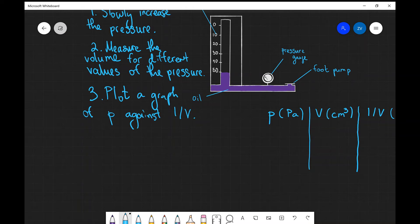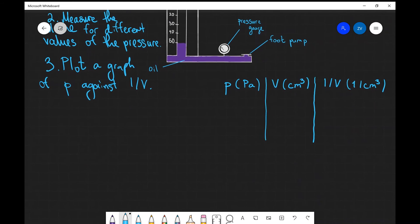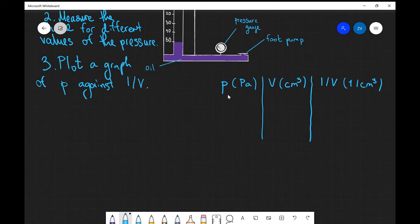In practice, in order to plot a graph of pressure against 1/V, we're going to have a table of results. We have the pressure, the volume, and 1/V that we're going to be recording. We're going to measure the pressure and the volume, then calculate 1/V so it'll be easier to plot.